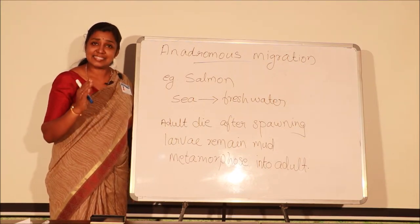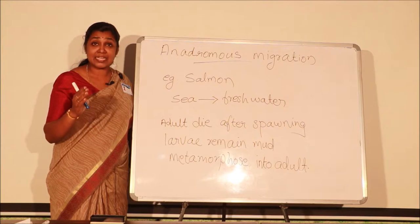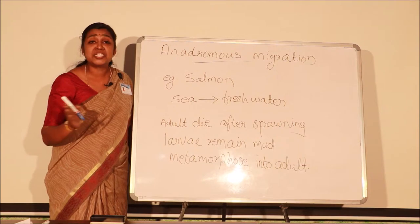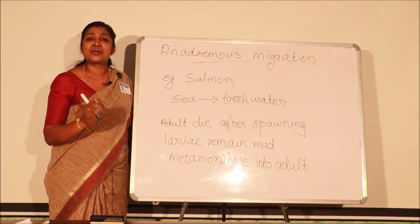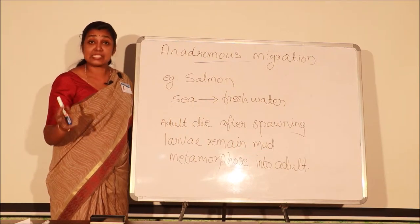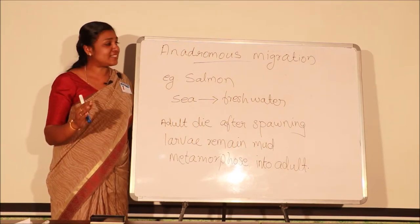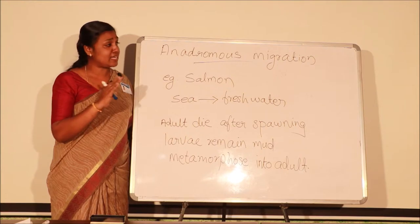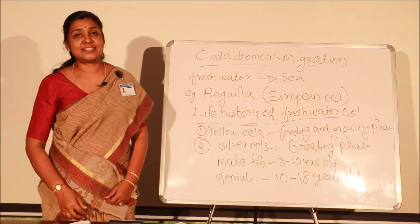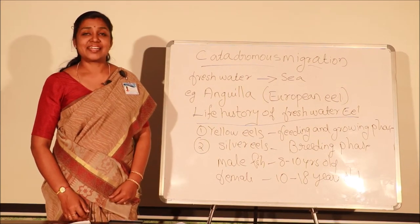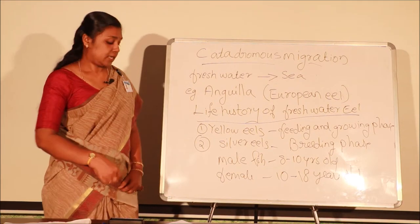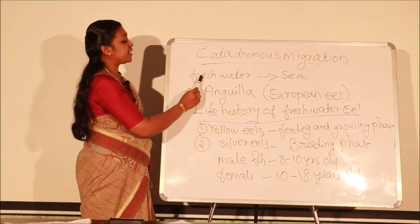The salmon fish lives in the sea, and at the time of migration — the time of breeding — they start their movement toward the river, toward freshwater, to find a safe place to spawn. Please remember that anadromous migration is from sea to freshwater.